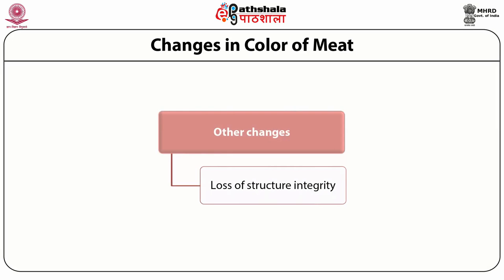Loss of structural integrity: post-mortem alteration of membrane properties initiates the degradation of muscle proteins and causes progressive disruption of myofibrillar structure. Enzymes like cathepsin, which remain inactive in living tissue, become active as muscle pH drops; these initiate the degradation of muscle protein and thus lose structural integrity.